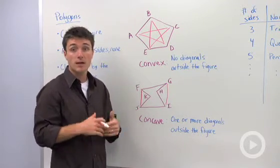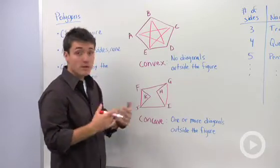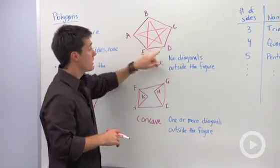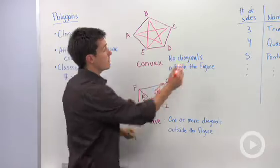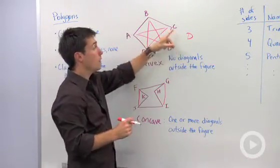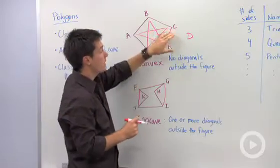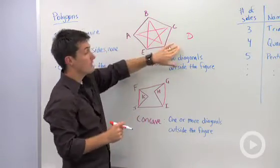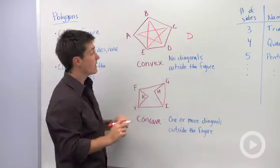Now the last key thing about polygons is how do you name them? Well, that's pretty easy, because all you have to do is pick one vertex. So let's say I pick D. If I start with D, I can go in clockwise or counterclockwise, but I'm going to have to be consecutive. So if I start with D, there's two ways I can name this pentagon.